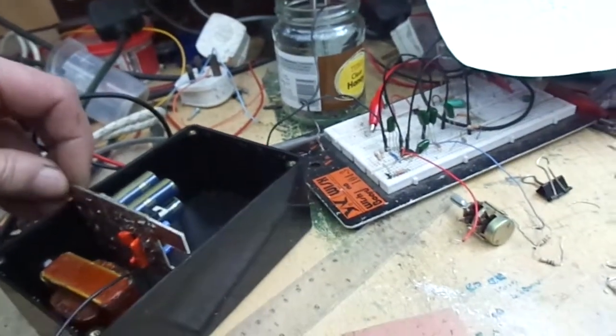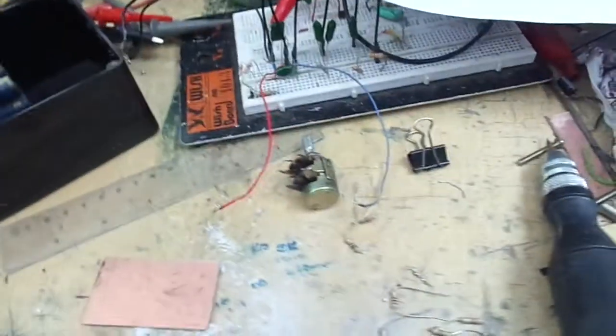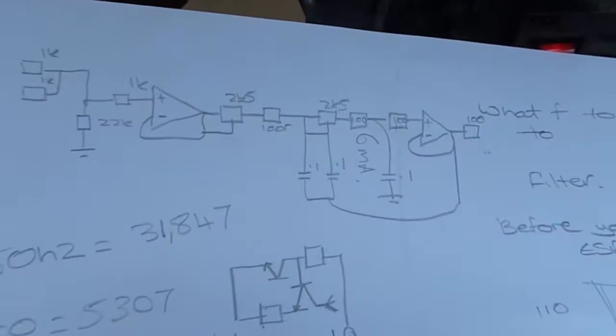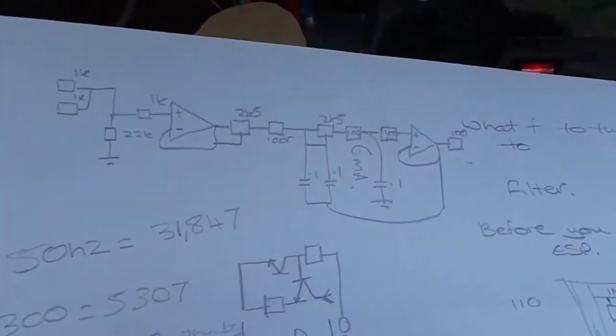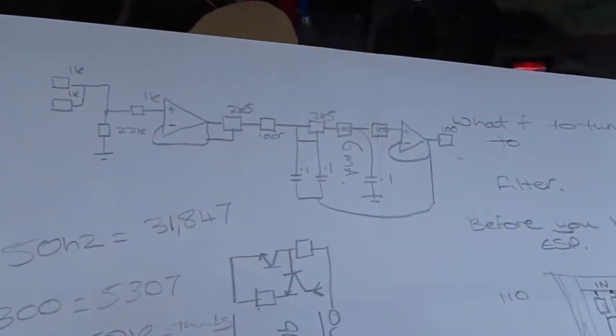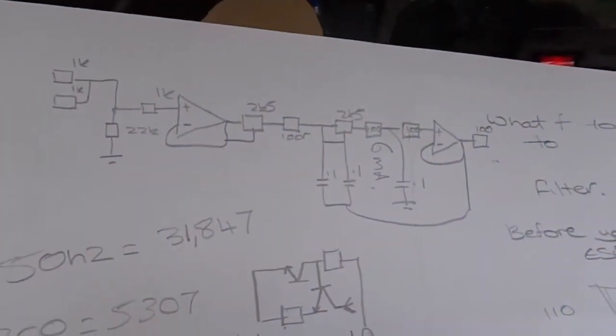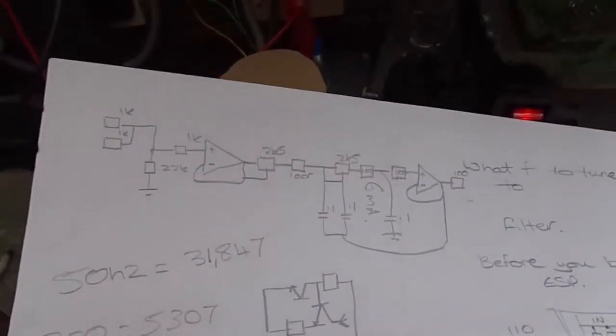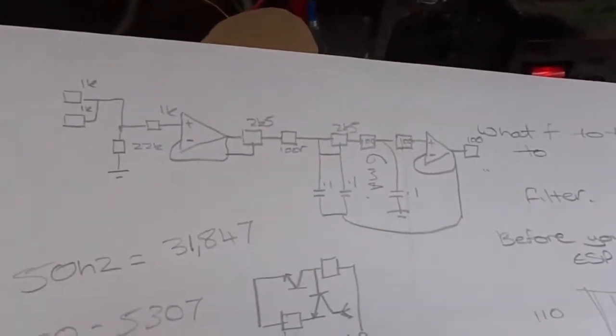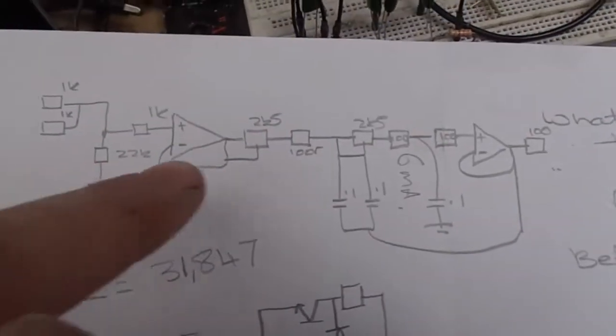What I'm making here today is a variable low pass filter which goes from about 10 Hertz to 300 Hertz. So basically, this is the circuit.